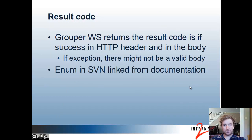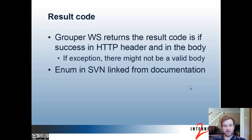The result code is returned in the HTTP header and in the body of the request. That's because in an exception there might not be a valid body, so you can always get the result code from the HTTP header. The result code is a Java enum, which you can get from Subversion Javadoc linked from the documentation.